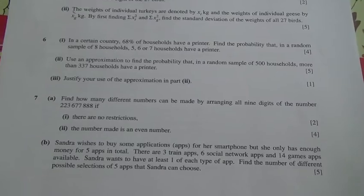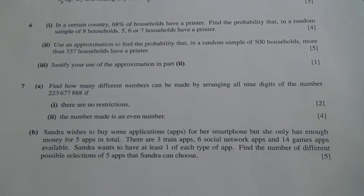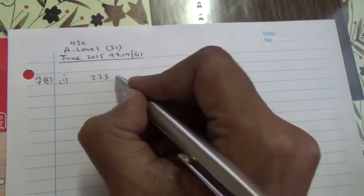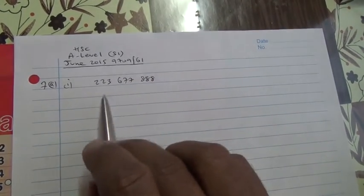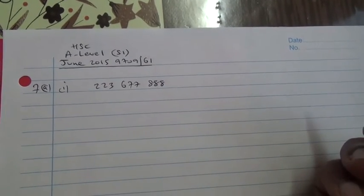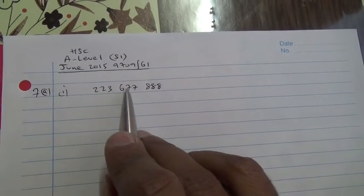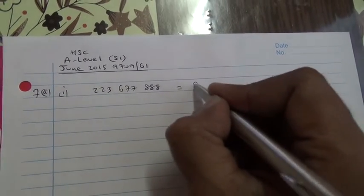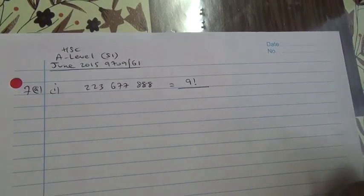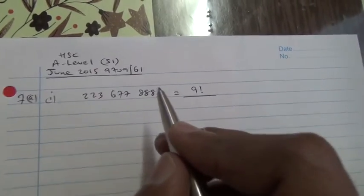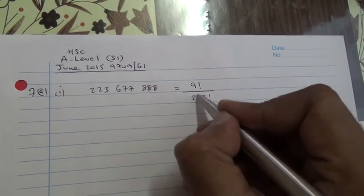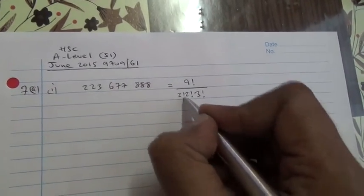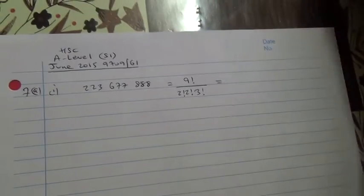Now, if there are no restrictions, what are we going to do? So the number is 223,677,888. How many ways can we arrange this? When it comes to arrangement, we have to do permutations. We have 9 digits, so we use permutation of 9 — factorial of 9 — divided by the factorials of the repeating digits. There are three 8s, so divide by factorial of 3. Two 7s, divide by factorial of 2. Two 2s, divide by factorial of 2. And the outcome is going to be your answer.